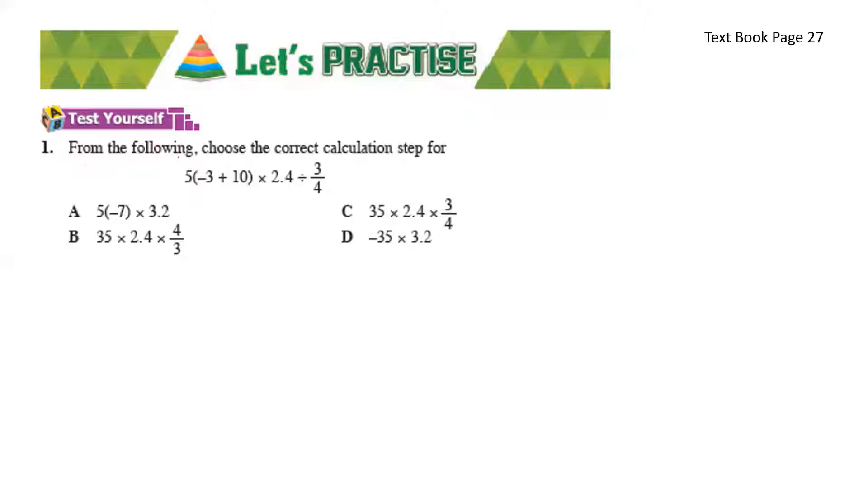From the following, choose the correct calculation step for this equation. Here, let's do it. 5 bracket negative 3 plus 10 times 2.4 divided by 3 over 4. According to the BODMAS rule, we'll have to do the bracket first. So, 5, 7 times 2.4 times 4 over 3.